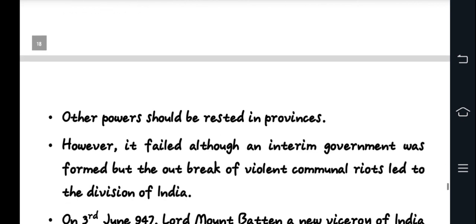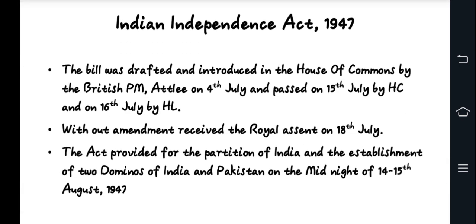The Indian Independence Act of 1947 was the final legislative act that created Pakistan and India as two separate dominions. Key provisions included termination of British sovereignty over India, division into two dominions with transfer of legislative power to their respective governments. The Act received royal assent on 18th July 1947, and the 15th August 1947 saw partition into India, while Pakistan emerged on 14th August. This concluded the long struggle for independence and realized the Muslim League's demand for a separate state.